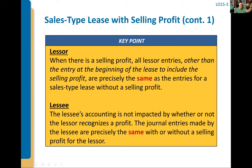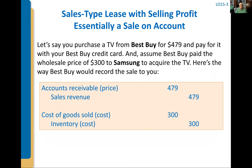In substance, what we're saying is this is really like an installment sale — a sale on account. Lease accounting for the lessor works exactly like if Best Buy were selling a TV. These transactions always existed like this in substance, but these leases weren't on the books. They were in substance like a purchase, like a sale. Now we've created accounting so they will look just like a sale on account with receivables.